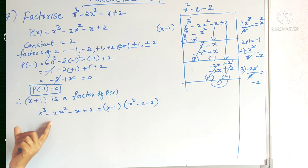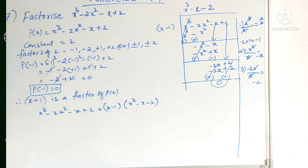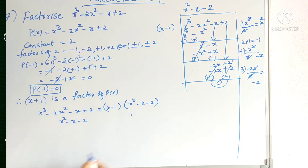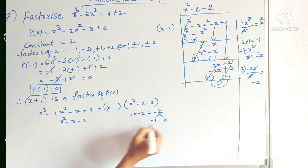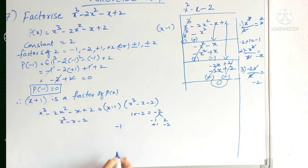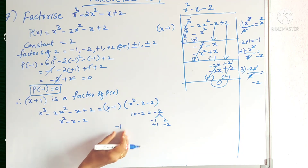Now these are the factors of the given polynomial p(x). Again we have to find out the factors for x square minus x minus 2, which is a quadratic polynomial of degree 2. The coefficient of x square is 1 and the constant term is minus 2. Multiply those: 1 into minus 2 is minus 2. Write the factors of minus 2: minus 1 into plus 2, and plus 1 into minus 2. Since the coefficient of x is minus 1, we need two factors that add to minus 1.